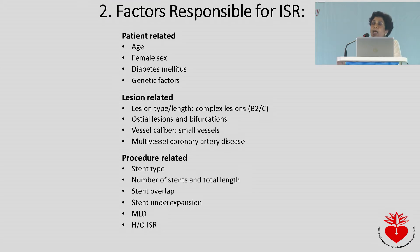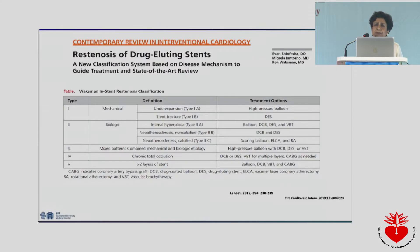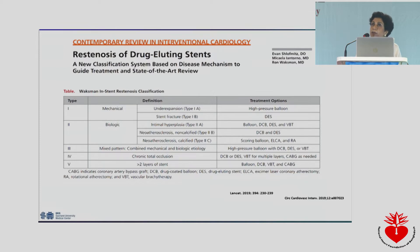Multi-vessel disease and procedure-related causes include stent fracture, dissection, or an under-expanded stent, all of which can lead to in-stent restenosis. In-stent restenosis has been reclassified recently according to the disease mechanism. The underlying cause could be mechanical — like stent fracture, strut fracture, or under-expansion — or biological, such as neointimal hyperplasia, new atherosclerosis without calcification, or new atherosclerosis with calcification, also known as Type 2C.